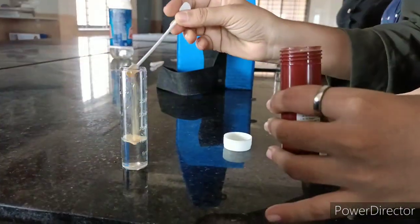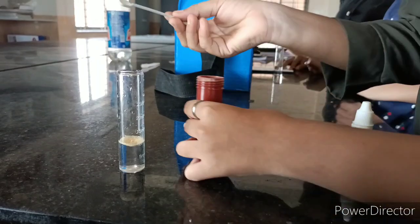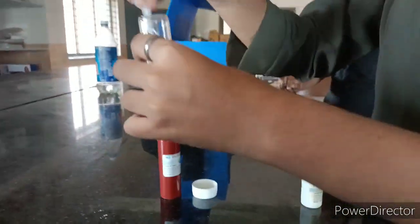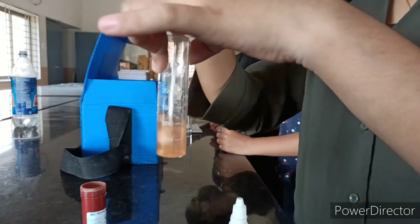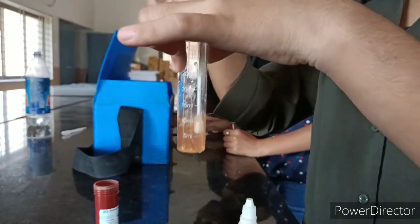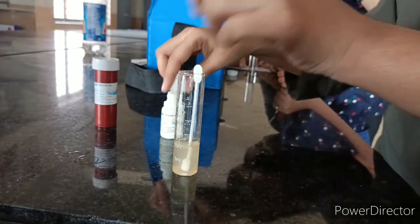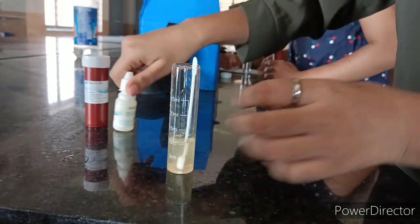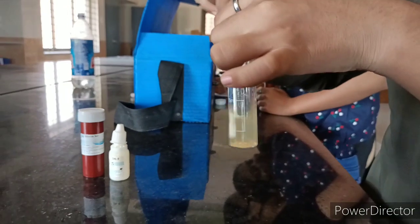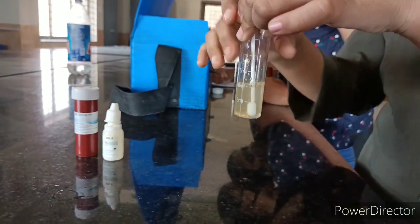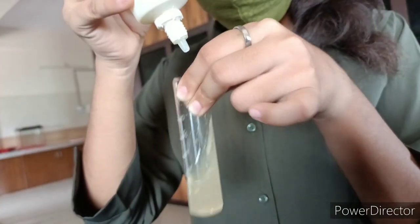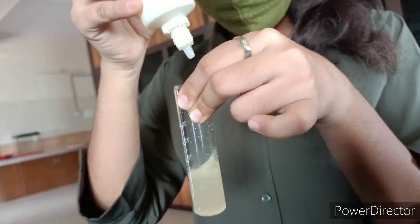Then add one spoonful of CHL-1 powder and mix it well till it dissolves in water. Then add a few drops of CHL-2 and mix it well. Then drop by drop add the CHL-3 reagent until